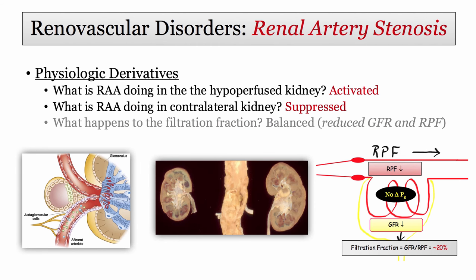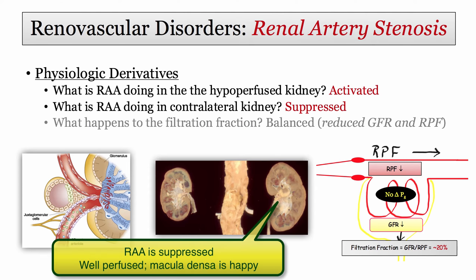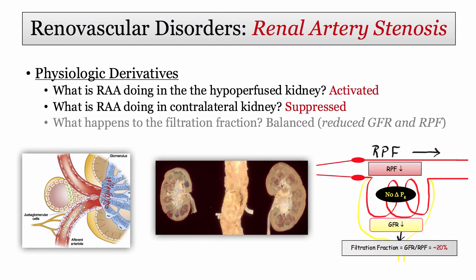Here are the physiologic derivatives — short and sweet, as we've pretty much covered these concepts already. What happens to the renin-angiotensin system in the hypoperfused kidney? It is activated, with angiotensin II and aldosterone flying high. What is going on with the contralateral, well-perfused kidney? The renin-angiotensin system is suppressed or inactive. The afferent arteriole is well-perfused and the macula densa is loaded with salt — it is just trying to maintain normal fluid balance.